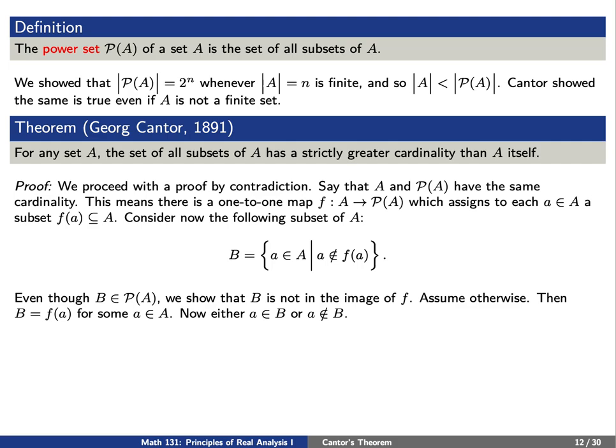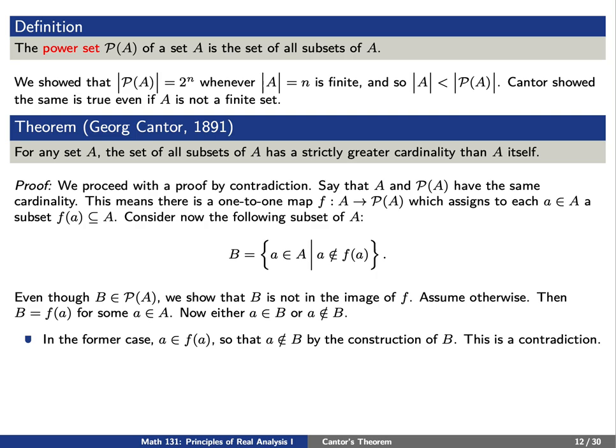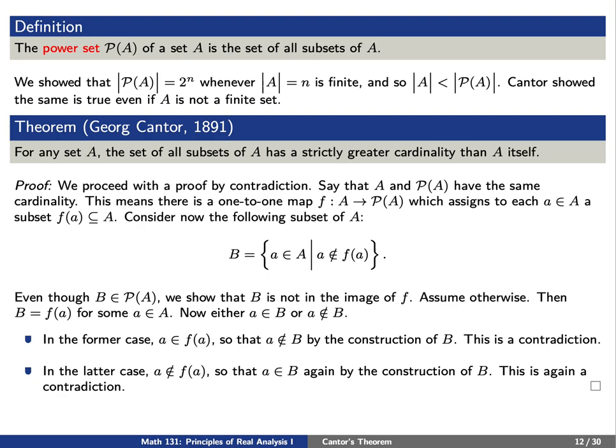This means that B = f(a) for some element lowercase a in our set capital A. We have two possibilities to consider: either lowercase a is in the set B, or lowercase a is not in B. In the first case, since B = f(a), then a is an element of f(a). But from the way we constructed B, a is not an element of f(a) — a contradiction. In the second case, if lowercase a is not an element of B, then a is not an element of f(a). But by the construction of B, we see that a is an element of capital B — again a contradiction. This type of argument is called a diagonal argument, and we'll see this over and over again throughout today's discussion.